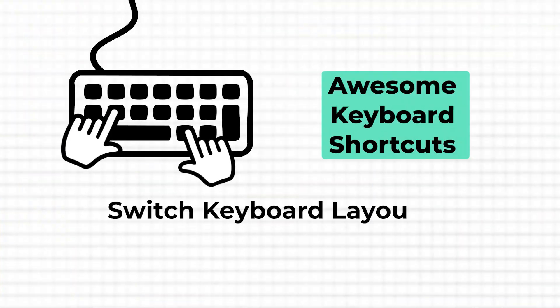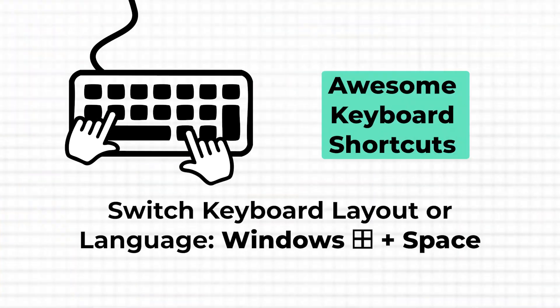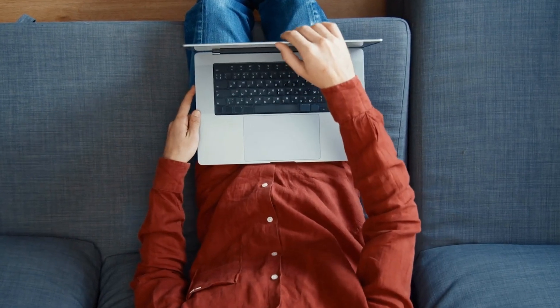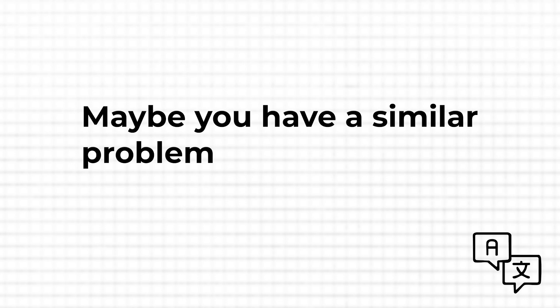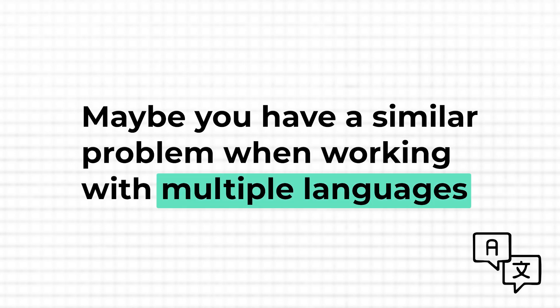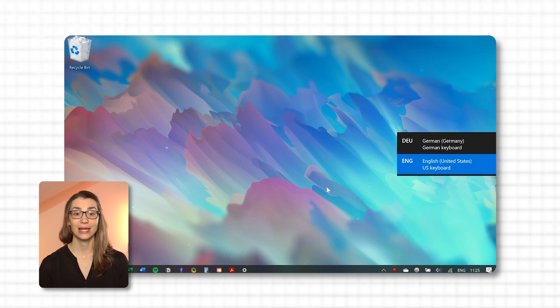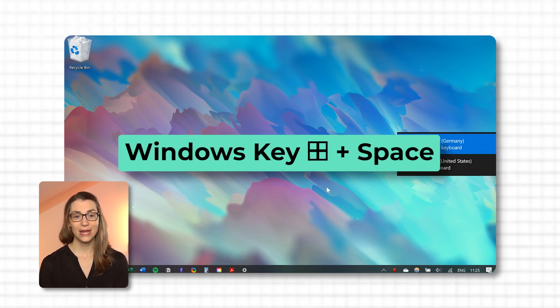Let's start with one of my favorite pet peeves. Sometimes when I start my laptop or computer, the keyboard language changes to English, which I'm not used to. Even though my computer system is set to English, my keyboard layout and language should be German. Maybe you have a similar problem when working with multiple languages — you always find yourself clicking through the menu to change the keyboard language. The simple solution is the shortcut Windows plus Space.